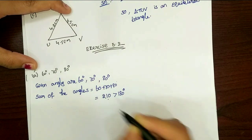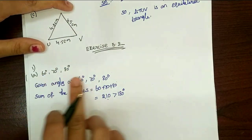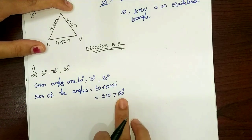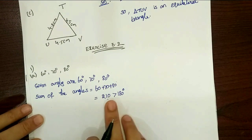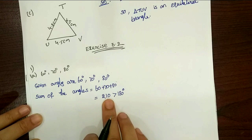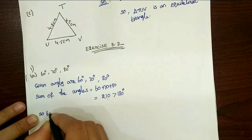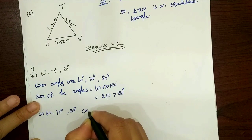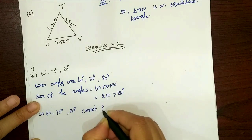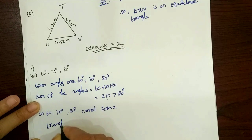Because the sum is 210 — which is above 180 — these three angles cannot form a triangle. For three angles to form a triangle, the sum must be exactly 180. Since 210 is above 180, 60, 70, and 80 cannot form a triangle.